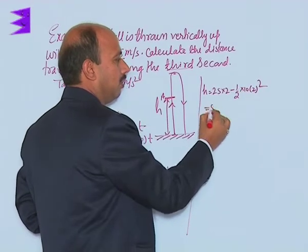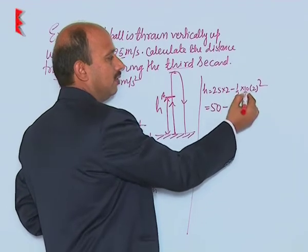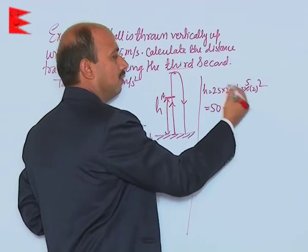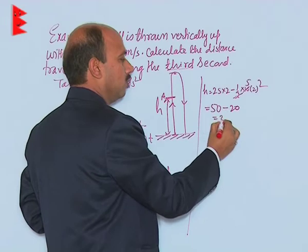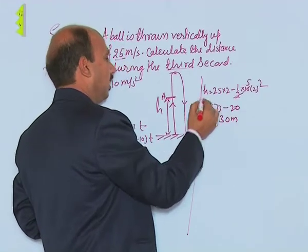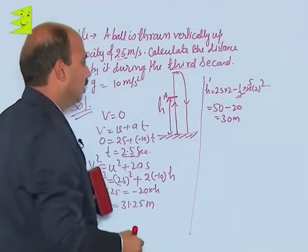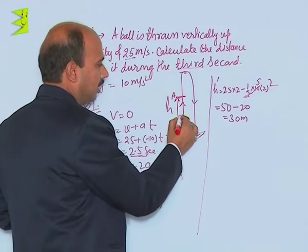That will be 50 minus 5 times 4, which is 20, equals 30 meters. We can take this as h prime. So this height is 30 meters.